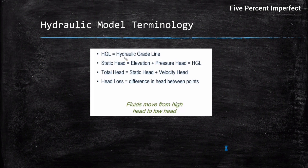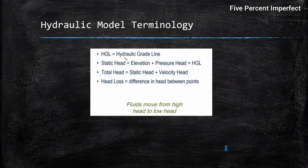A combination of all three heads gives rise to new terms. The hydraulic grade line (HGL) represents the surface or profile of water flowing in an open channel or partially full pipe. Static head is the elevation plus pressure head — it does not contain the velocity head — and is also known as the HGL. Total head is static head plus velocity head.